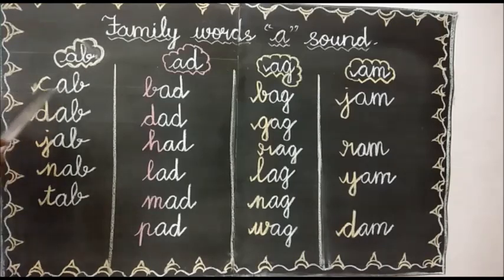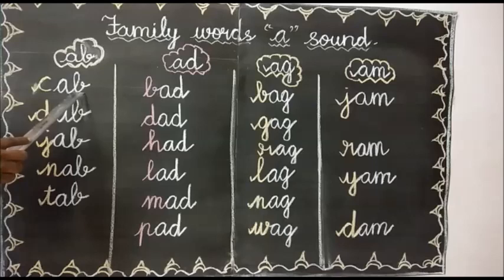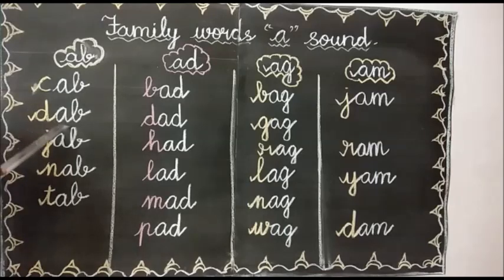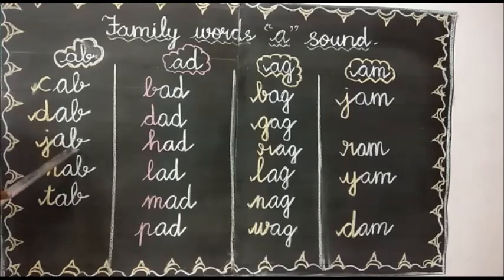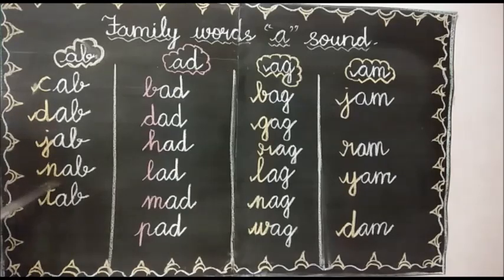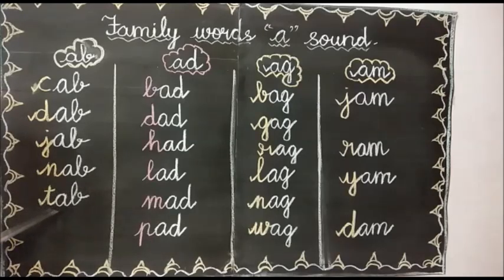First one: cab. C, A, B — cab. Dab: D, A, B — dab. Jab: J, A, B — jab. Nab: N, A, B — nab. Tab: T, A, B — tab.